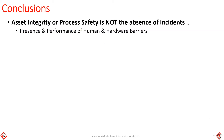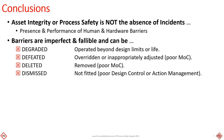Asset integrity or process safety is not the absence of incidents — it's the presence and performance of human and hardware barriers. Barriers are imperfect and fallible. They can be degraded, operated beyond design limits or design life; defeated, overridden or inappropriately adjusted due to poor management of change; deleted or removed due to poor management of change; or dismissed — not fitted due to poor design control or poor action management.